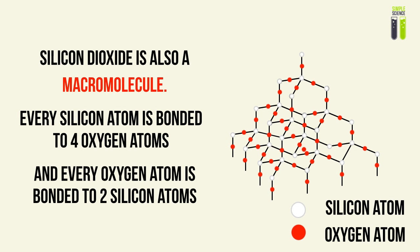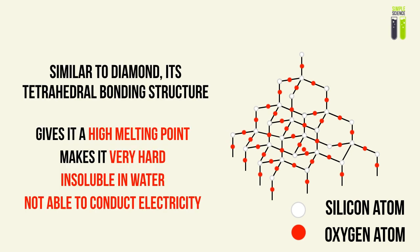Another macromolecule you will encounter in the IGCSE syllabus is silicon dioxide. It is a macromolecule in which one silicon atom is bonded to four oxygen atoms, and every oxygen atom is bonded to two silicon atoms. You can see a similarity between this structure and diamond — between each of the bonds you essentially insert an oxygen atom. Similar to diamond, silicon dioxide has a tetrahedral bonding structure, and this gives it properties very similar to diamond: a very high melting point and it is a very hard substance.